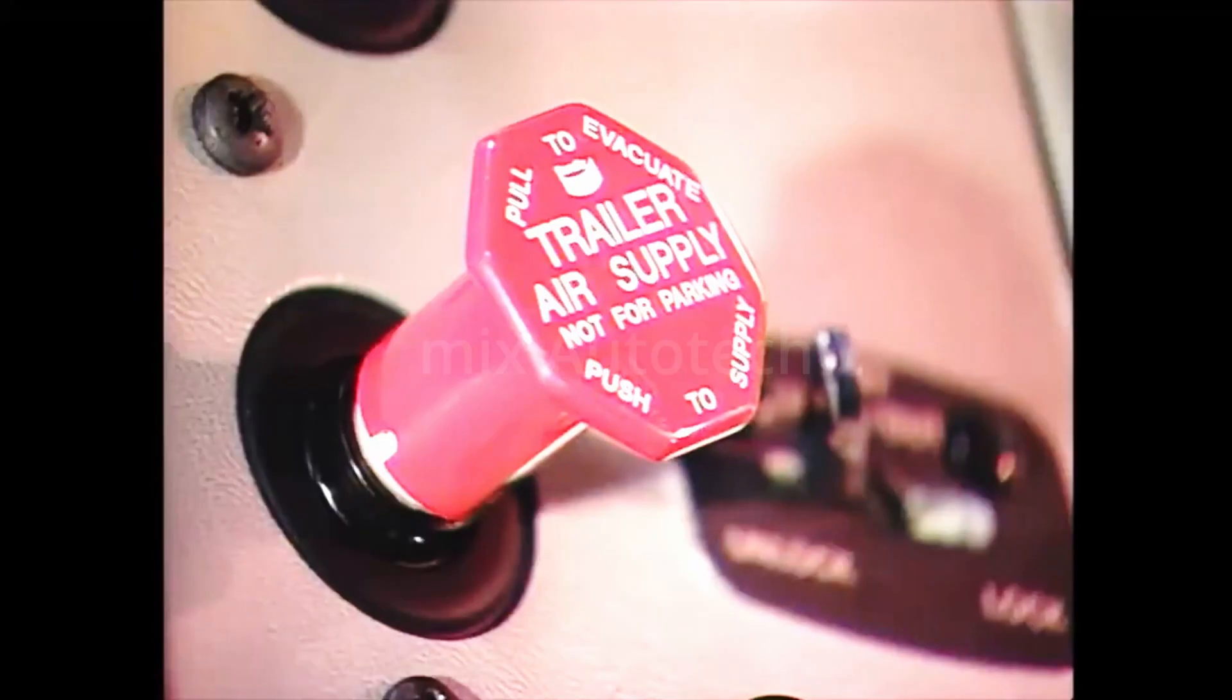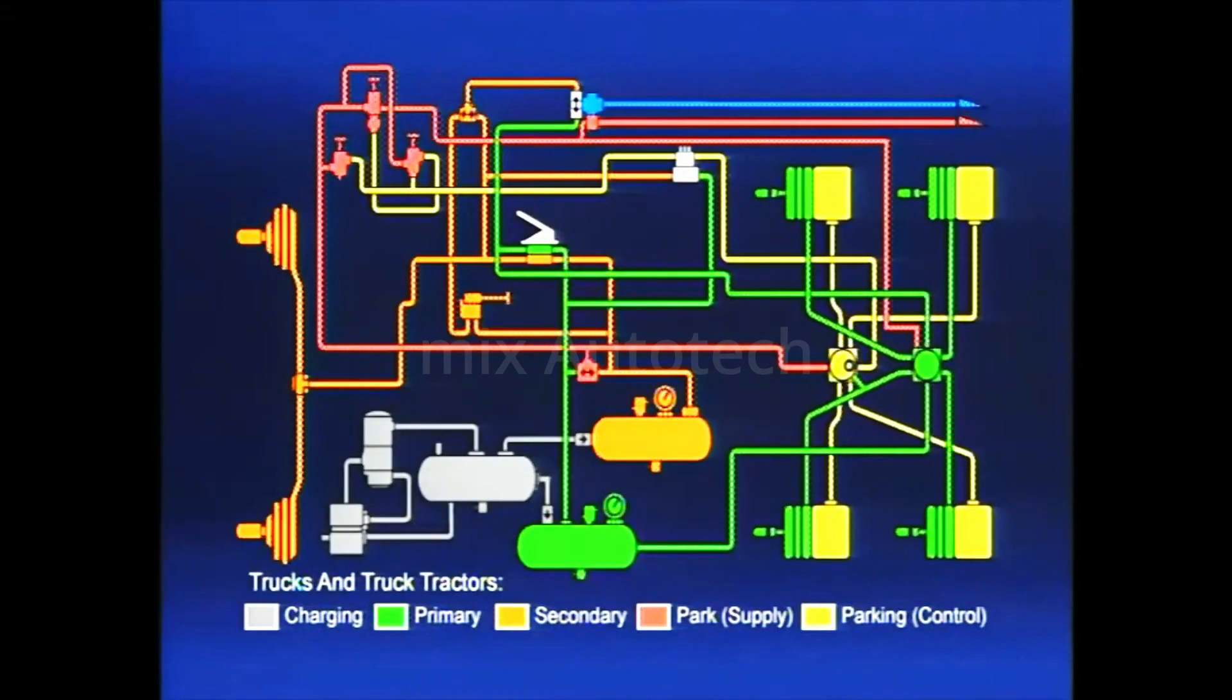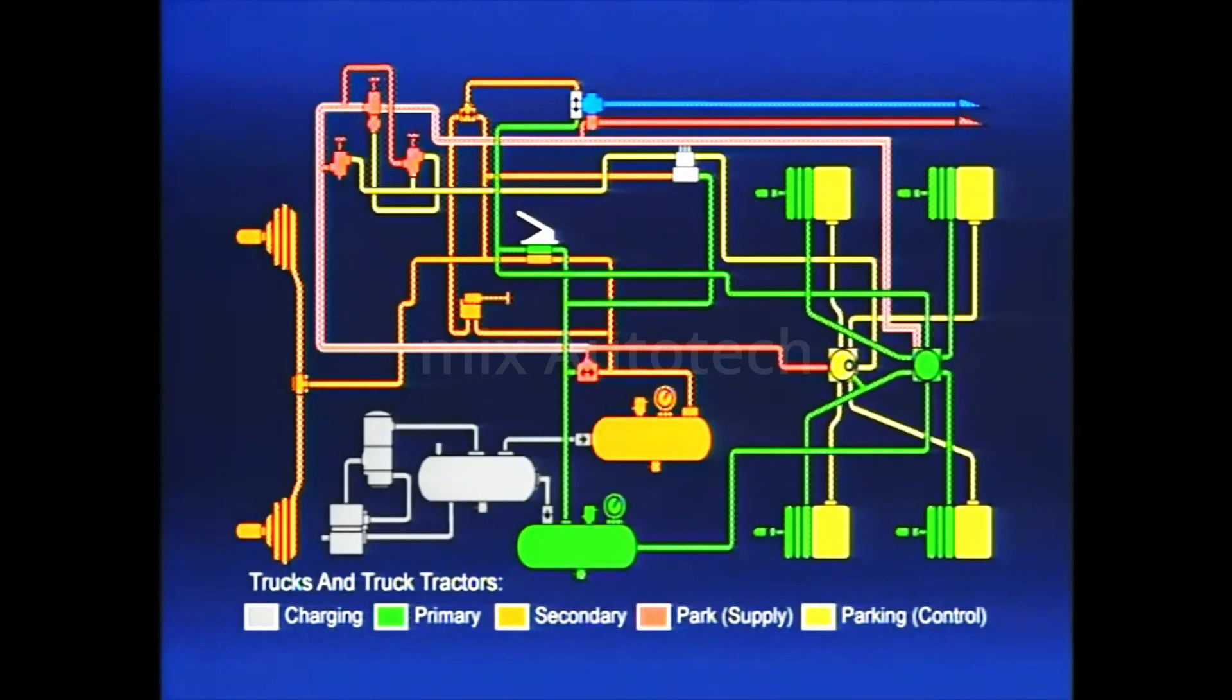When the PP-7 trailer supply valve is pulled, the trailer supply line is exhausted. Pressure is removed from the BPR-1 control port, signaling that the tractor is now in bobtail operation.